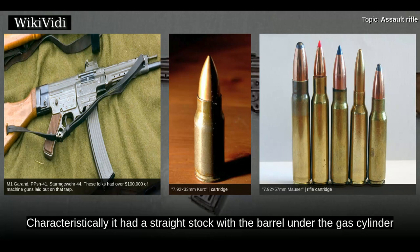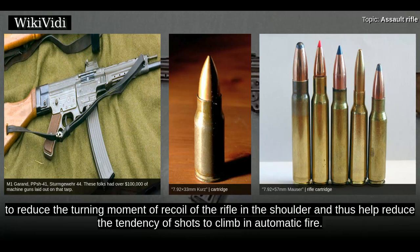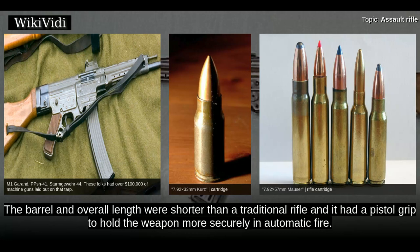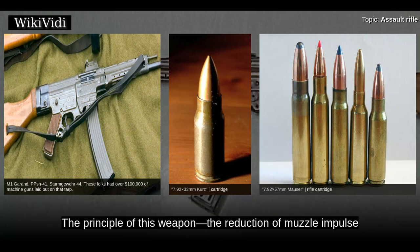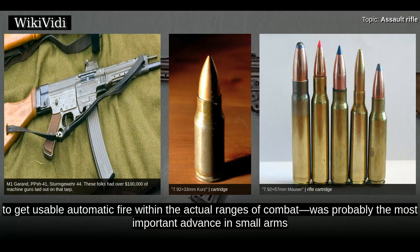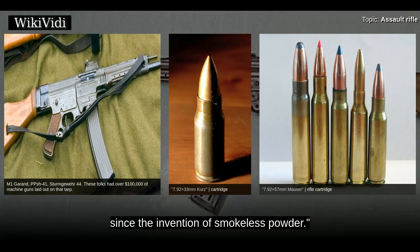Characteristically it had a straight stock with a barrel under the gas cylinder, to reduce the turning moment of recoil of the rifle in the shoulder and thus help reduce the tendency of shots to climb in automatic fire. The barrel and overall length were shorter than a traditional rifle, and it had a pistol grip to hold the weapon more securely in automatic fire. The principle of this weapon — the reduction of muzzle impulse to get usable automatic fire within the actual ranges of combat — was probably the most important advance in small arms since the invention of smokeless powder.